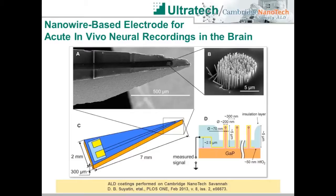Additional recent biological work was enhanced through the incorporation of an ALD film. This work utilizes nanowire-based electrodes for in vivo neurophysiological measurement. The gallium phosphide nanowires are 70 nanometers in diameter and 5 microns tall. 50 nanometers of hafnium dioxide is deposited on the gallium phosphide nanowires using a Cambridge Nanotech Savannah system. Finally, a layer of gold is deposited by another deposition technique for conduction of the in vivo brain signals. In this application, the ALD film serves a dual purpose: the hafnium dioxide improves the mechanical properties of the nanowires and provides electrical isolation between the gold electrode and the gallium phosphide nanowire structure.